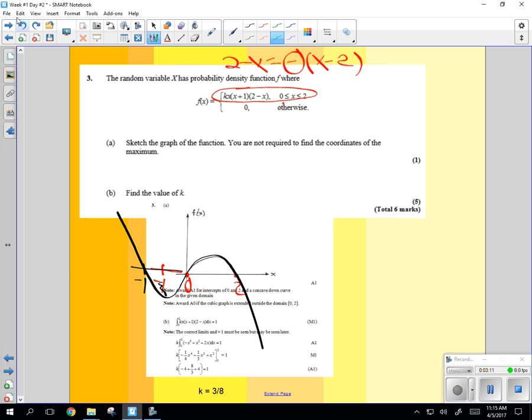And then they want, let's see, only between 0 and 2. So we can take this off and take that off. And so there's your graph. Everywhere else it's 0. That's what that means.